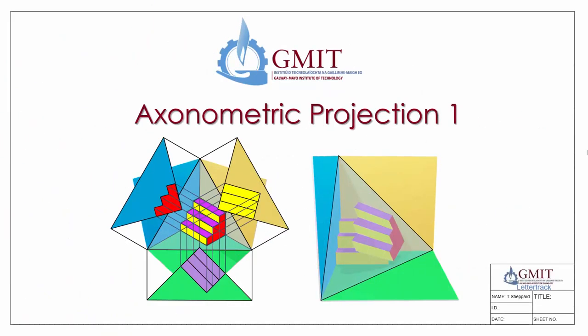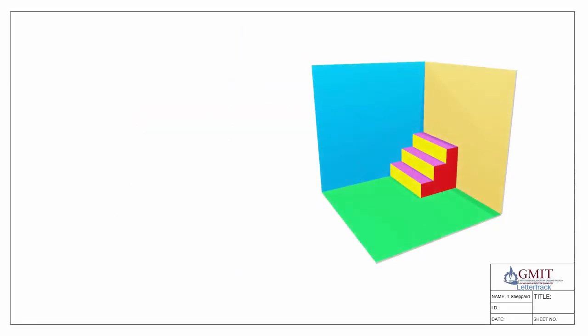Hello and welcome to the first video in our webcast series on the topic of axonometric projection. In this video we're going to look at how to create a three-dimensional image of an object where the image is seen scaled down and in accordance with how we would see the object when looking directly at it. Let's have a quick look at the background and see what an axonometric view is.